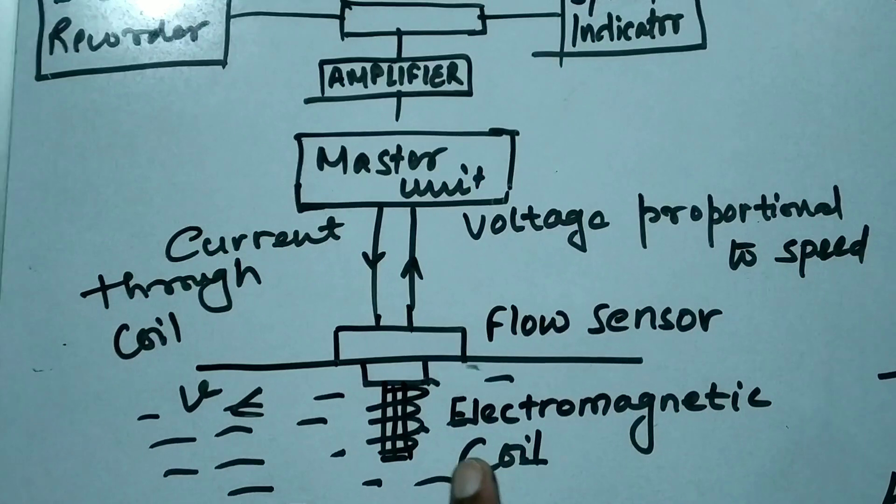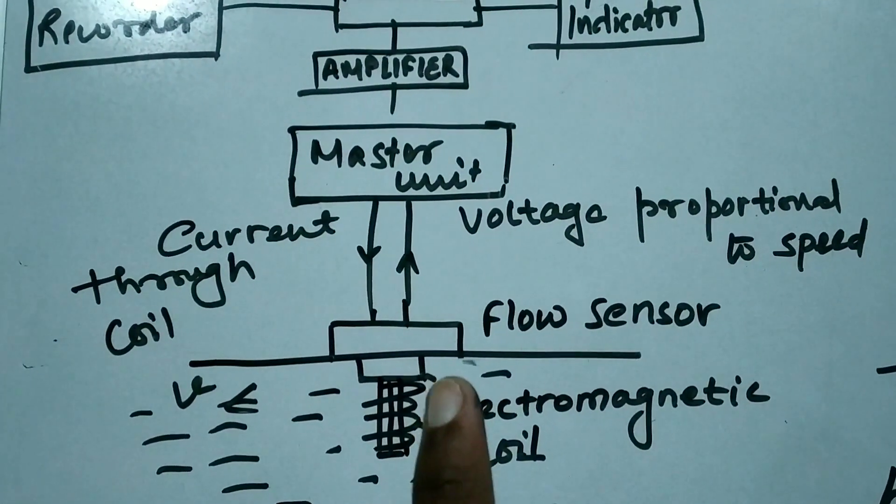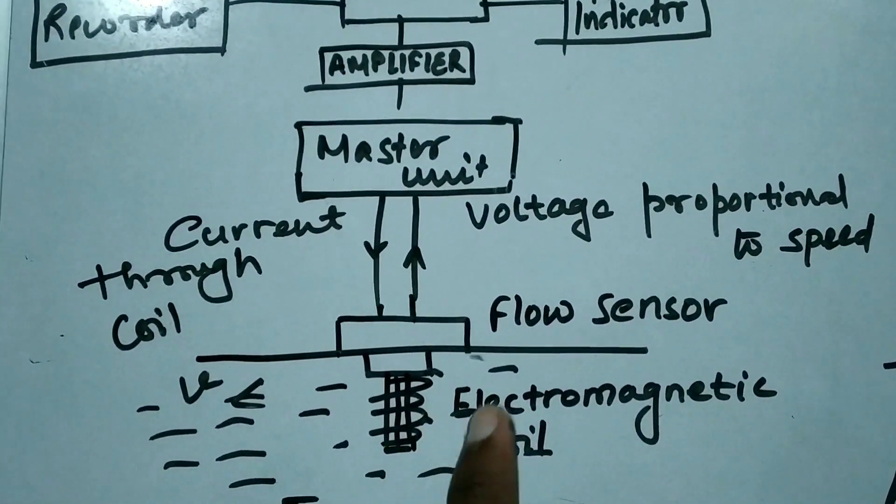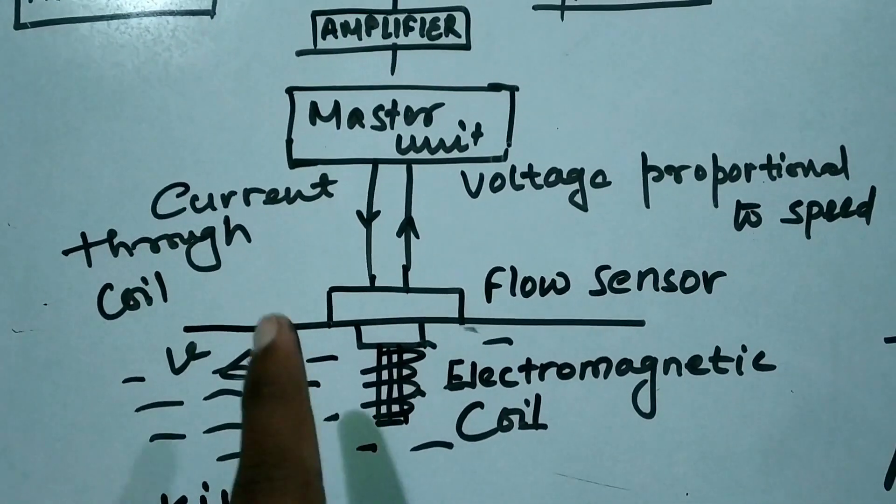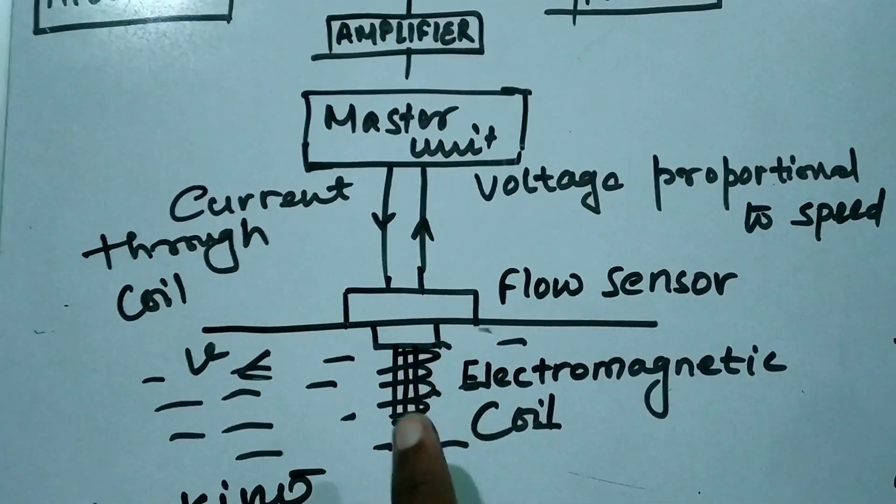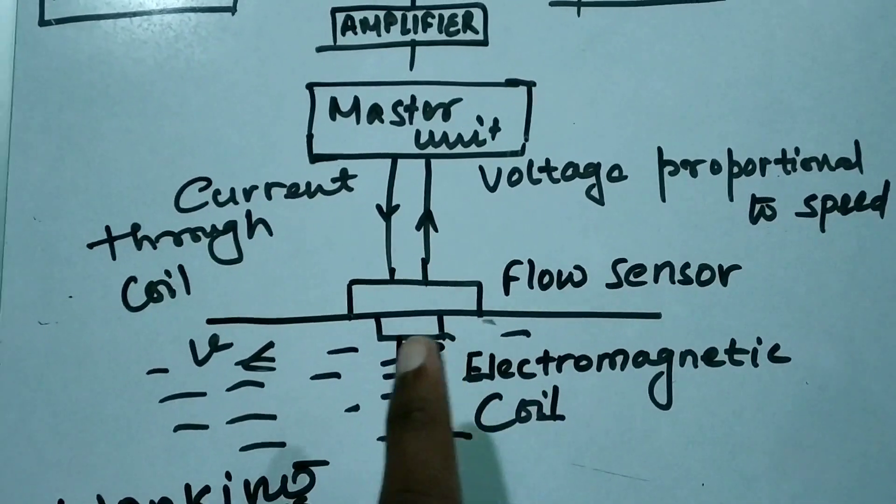In electromagnetic log, the magnetic field and the length of the coil are constant. Therefore, the EMF is directly proportional to the speed of the vessel.